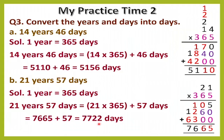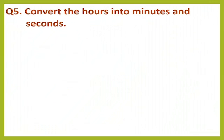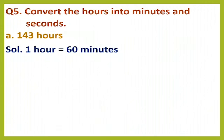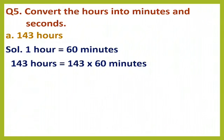The next question, number 5, is to convert hours into minutes and seconds. Question A is 143 hours — we have to convert 143 hours into minutes and then into seconds. We know that 1 hour equals 60 minutes, so we multiply 143 by 60.